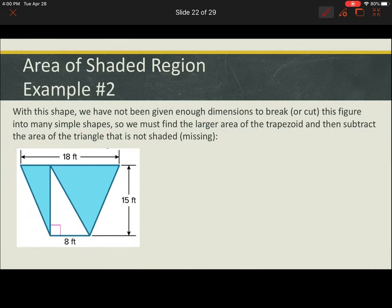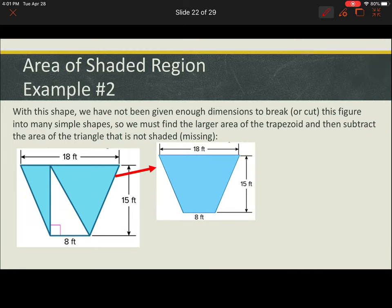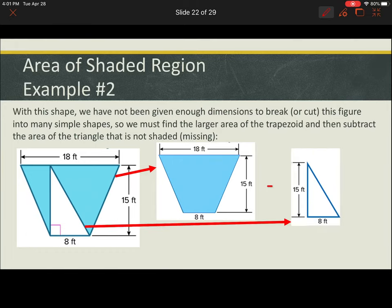Now looking at this example, we see we could break this into two triangles. However, we weren't given any dimensions that would allow us to do this. So we have to find the area of the larger trapezoid and then subtract the area of the triangle that is not shaded. In other words, that's the piece that's missing.